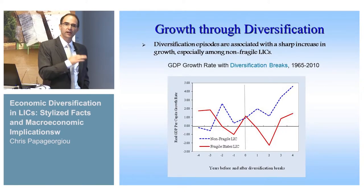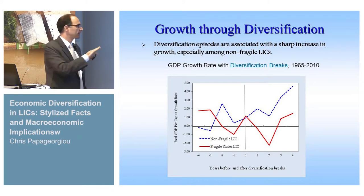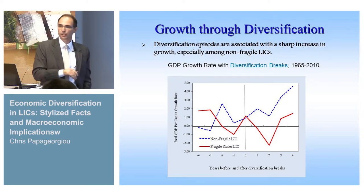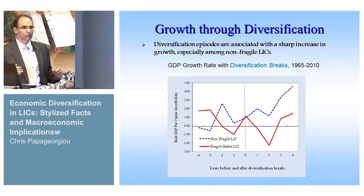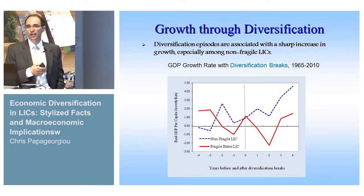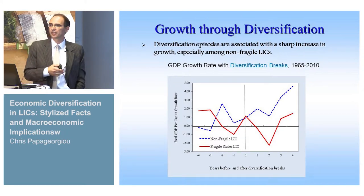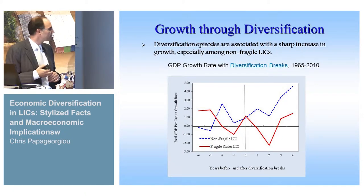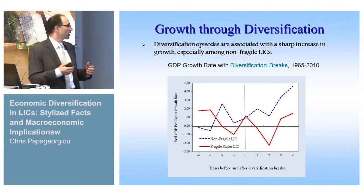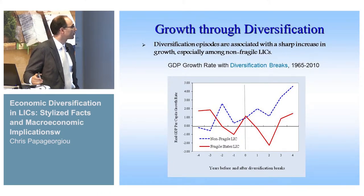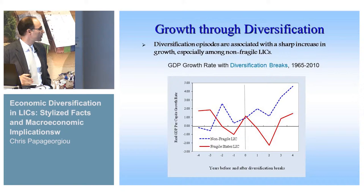We have done a lot of analysis, at least at the association level. One interesting dimension is when we looked at diversification spurts — extended periods of time where countries transform or diversify their economies. We split our sample between fragile and non-fragile states. Fragile states are defined by the World Bank as very low-capacity countries, about 20 to 25 countries. What we find is that diversification episodes are associated with a sharp increase in growth, especially for the non-fragile state sample.